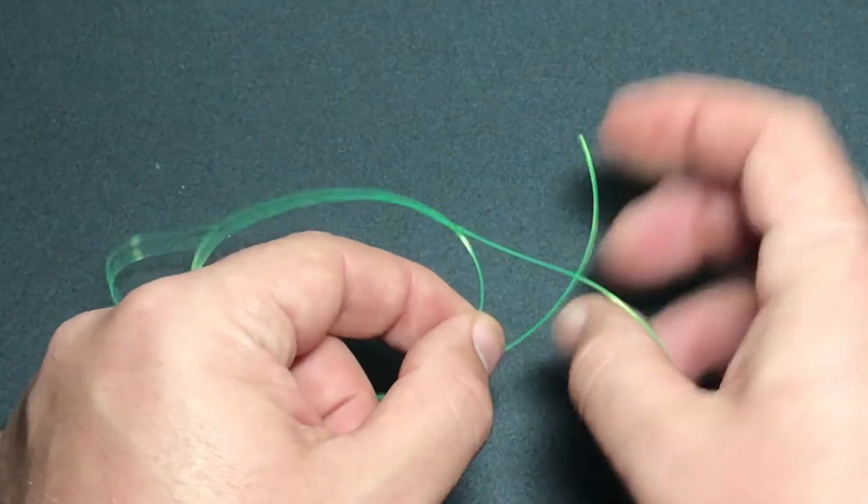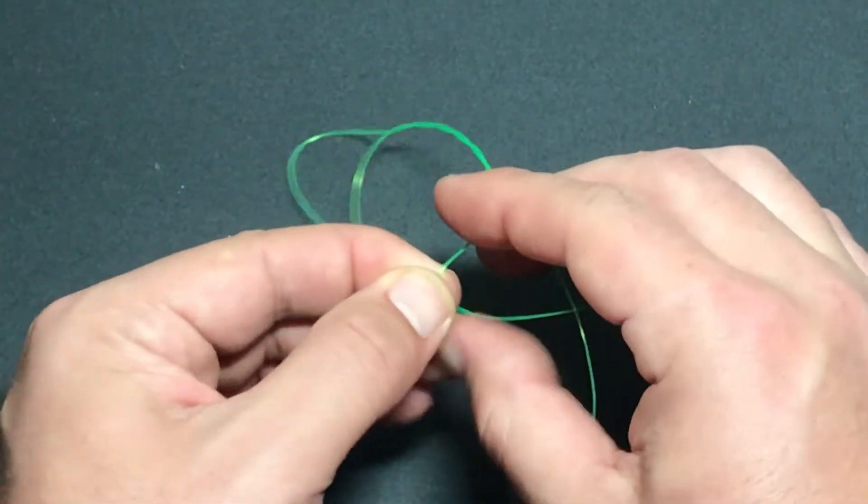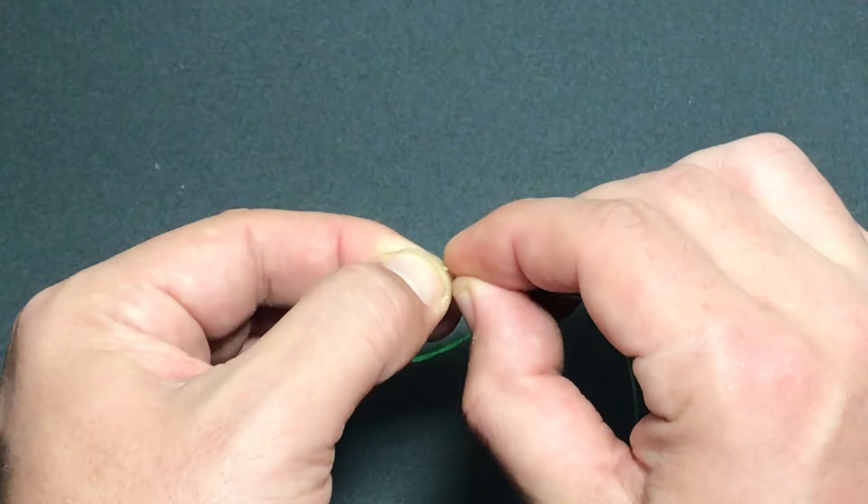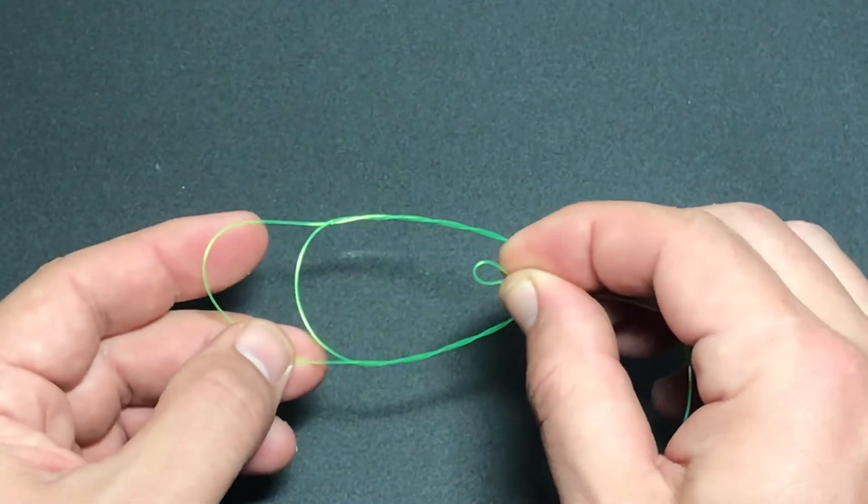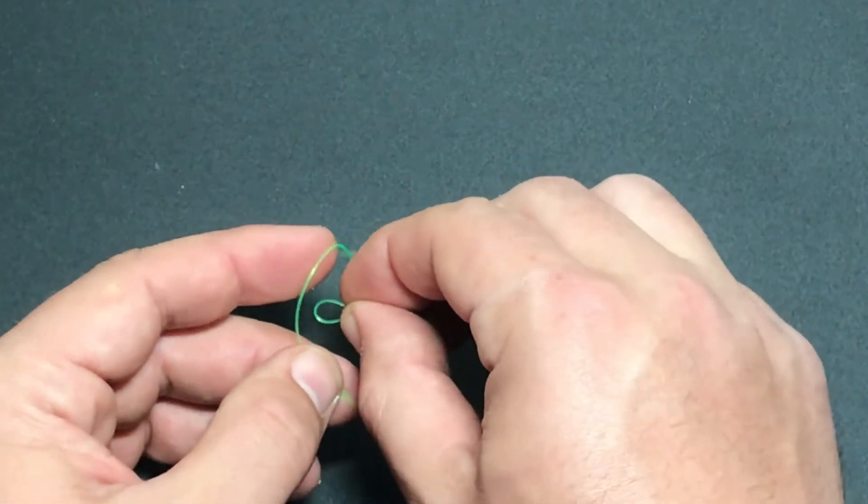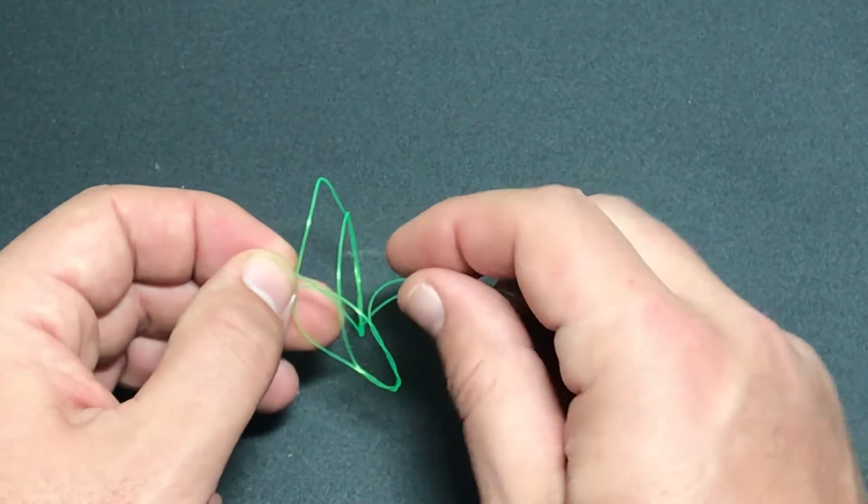So I'm going to come up to the top of the loop. I'm going to pinch the top of this loop until it forms a tiny little loop like this. We're going to take this tiny little loop and we're going to thread it through that big hole at the bottom.